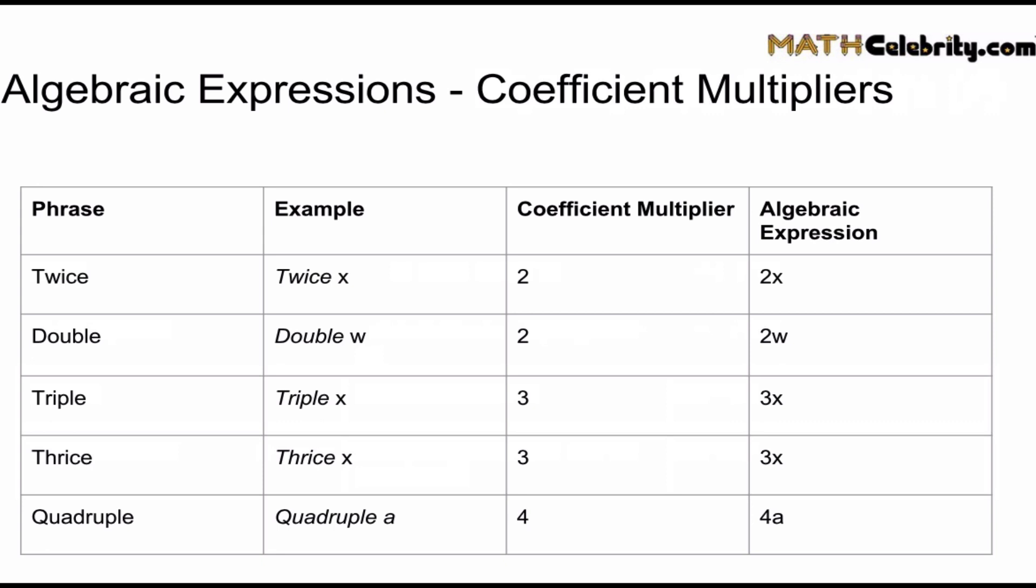If you take a look at this grid, I've laid it out for you step by step how to get from the phrase to the coefficient multiplier to the final algebraic expression. And what you care about is translating the phrase, column one, to the coefficient multiplier, column three. So I know, for example, that if I have triple something, I'm multiplying that something by 3. If you follow this grid, you'll know the coefficient multipliers.